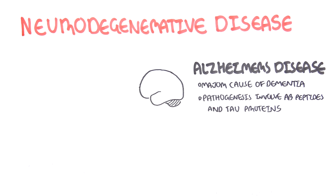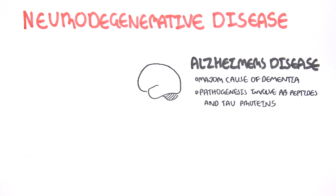In this video we're going to look at neurodegenerative diseases, beginning with Alzheimer's disease. Alzheimer's disease is a major cause of dementia. The pathogenesis involves amyloid beta peptides and tau proteins.